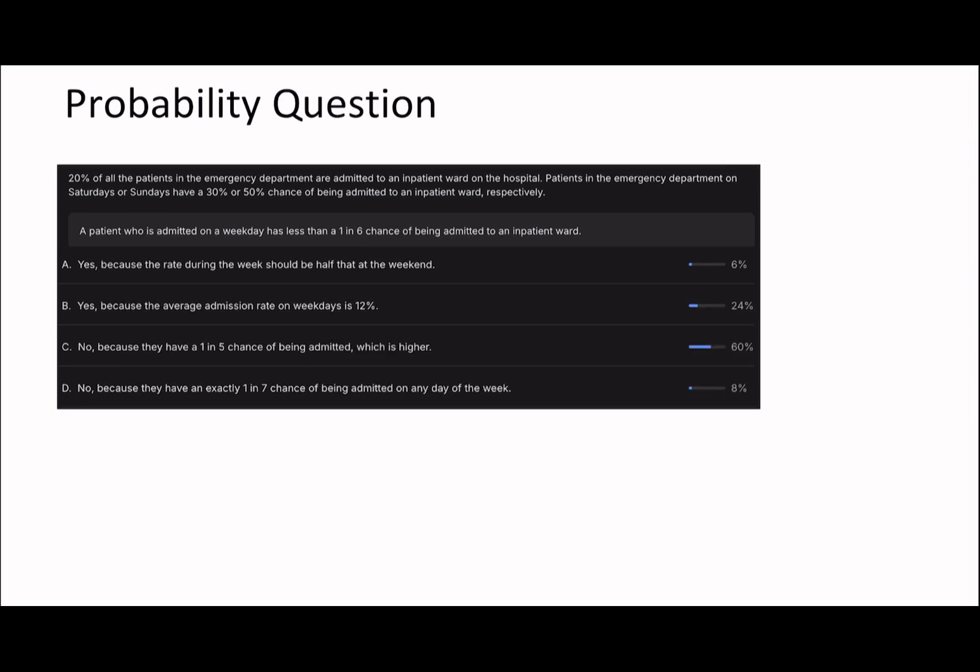So this question is an interesting one. So a patient who is admitted on a weekday has less than a 1 in 6 chance of being admitted to an inpatient ward. So if we read it, it says 20% of all patients in the ED are admitted to an inpatient ward on the hospital. Patients in the emergency department on Saturdays or Sundays have a 30% or 50% chance of being admitted, respectively. So the point is, you've got Monday, Tuesday, Wednesday, Thursday, Friday, Saturday, and Sunday. And this is 0.3, this is 0.5. But overall, the average probability that you have is 20%.